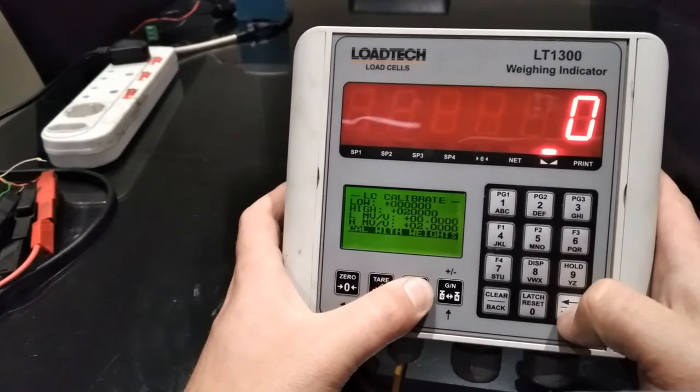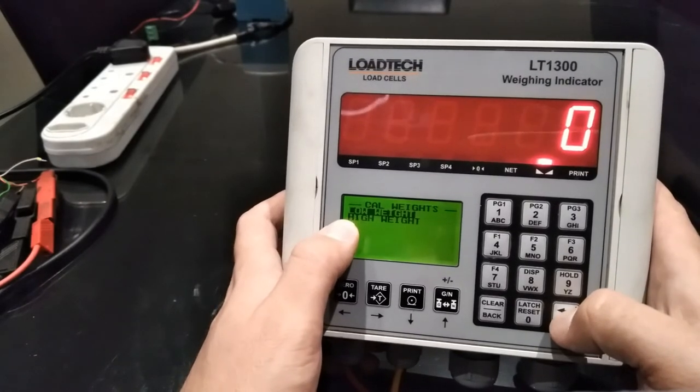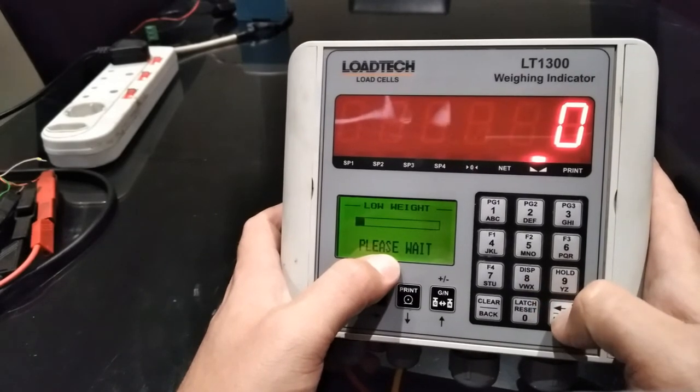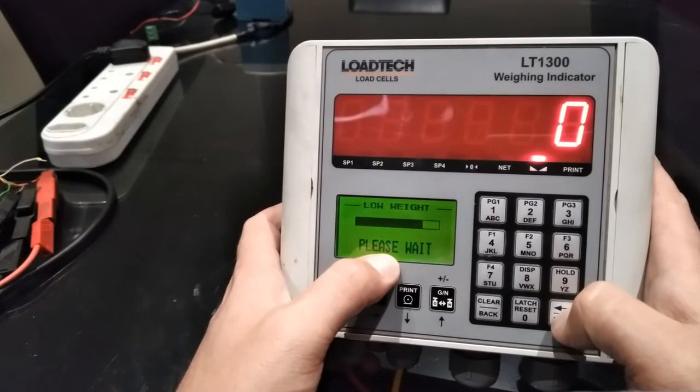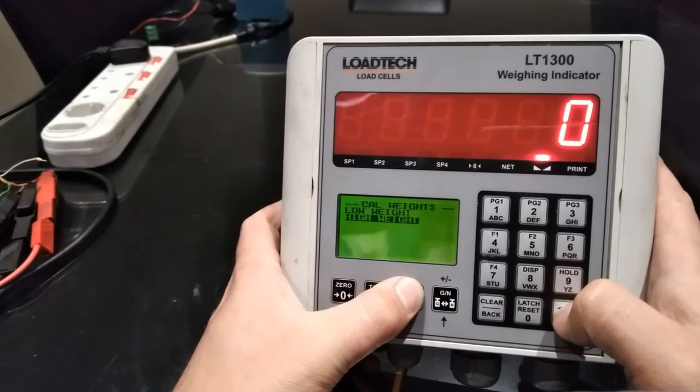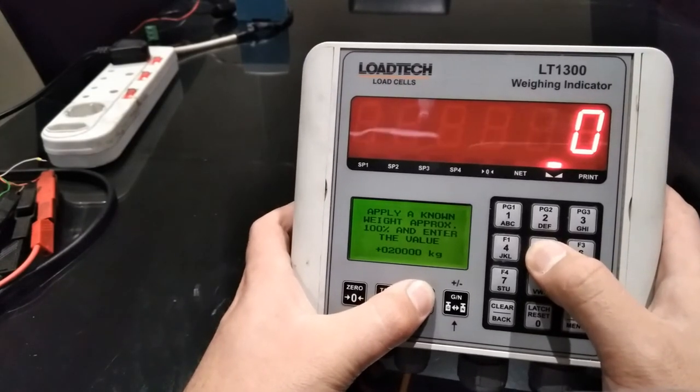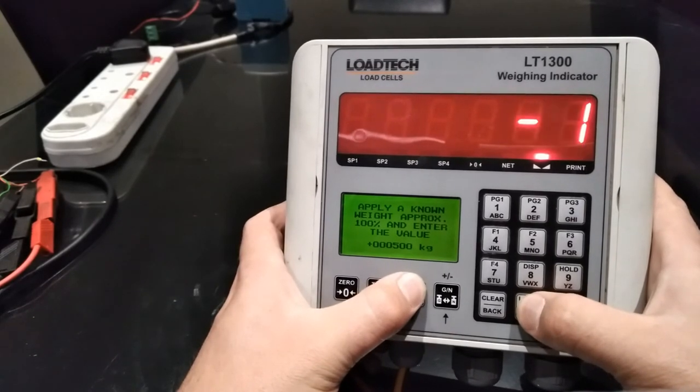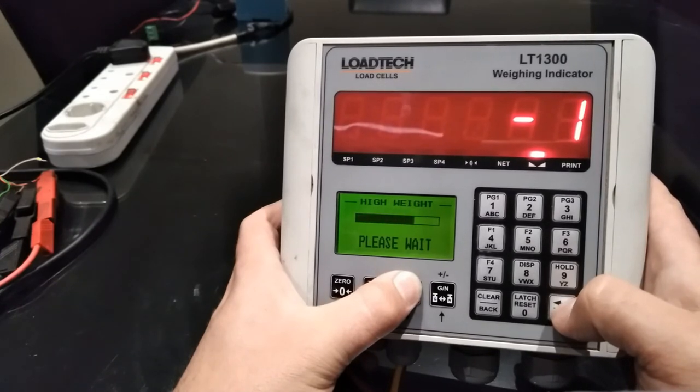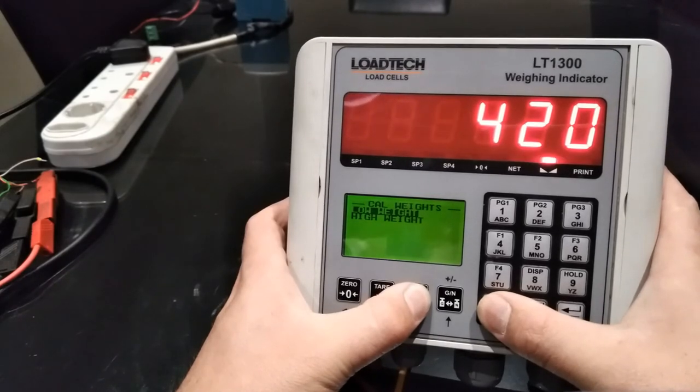The second way to calibrate is by using weights. Here you will see low and high weights. First, empty your scale, input zero and apply. Once you've done your zero point calibration, you can put a known weight on the scale. Let's say for instance you have a 500 kilogram weight. You can input 500 and press enter. Once this is done your LT1300 is calibrated.